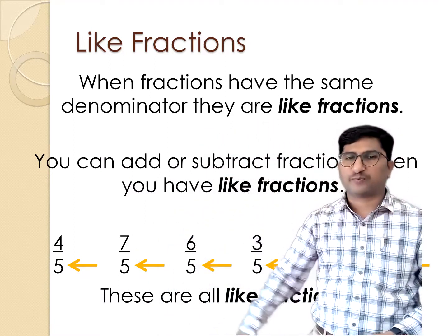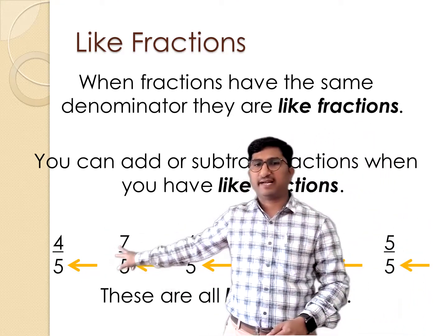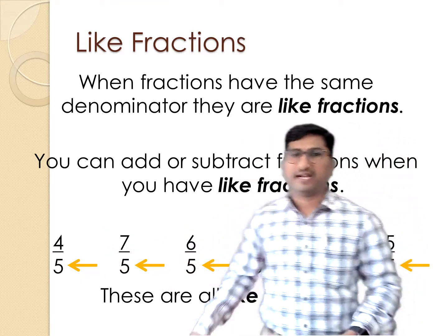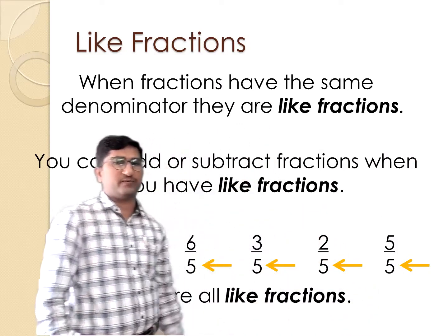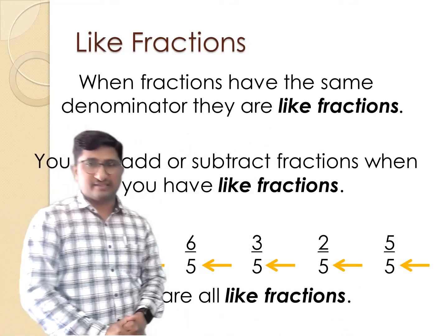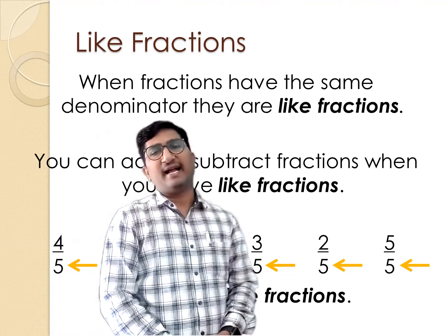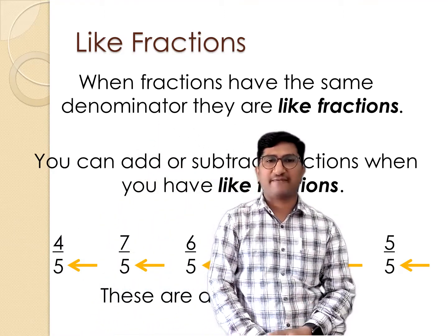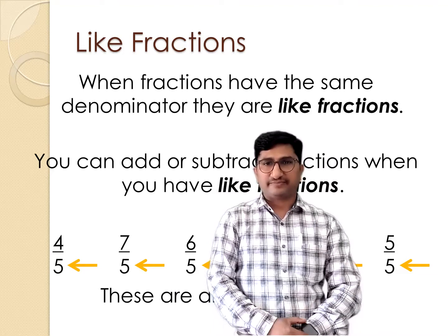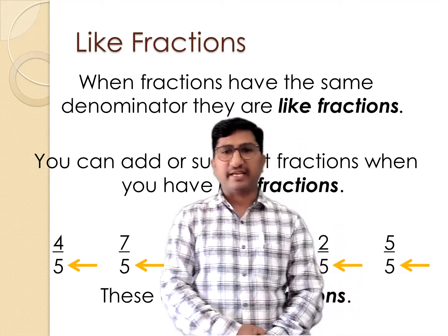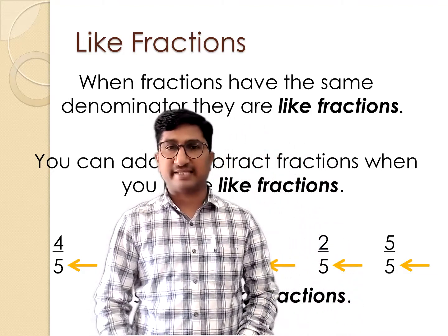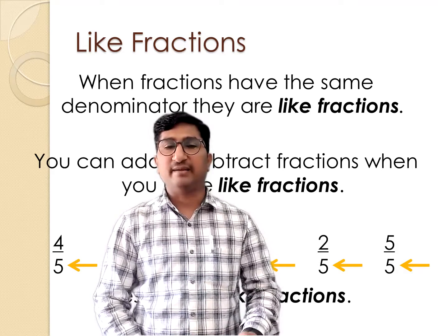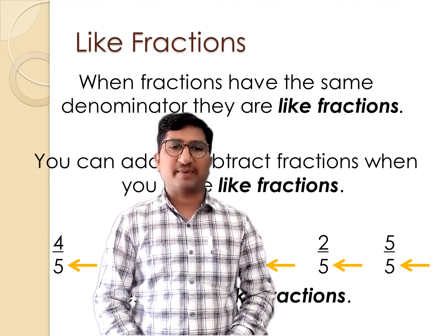Here we can see 4 upon 5, 7 upon 5, 6 upon 5, 3 upon 5, 2 upon 5, and 5 upon 5. These all have the same denominator, and because of that we call these fractions like fractions. If the fractions have the same denominator, you can compare them and easily add or subtract them.